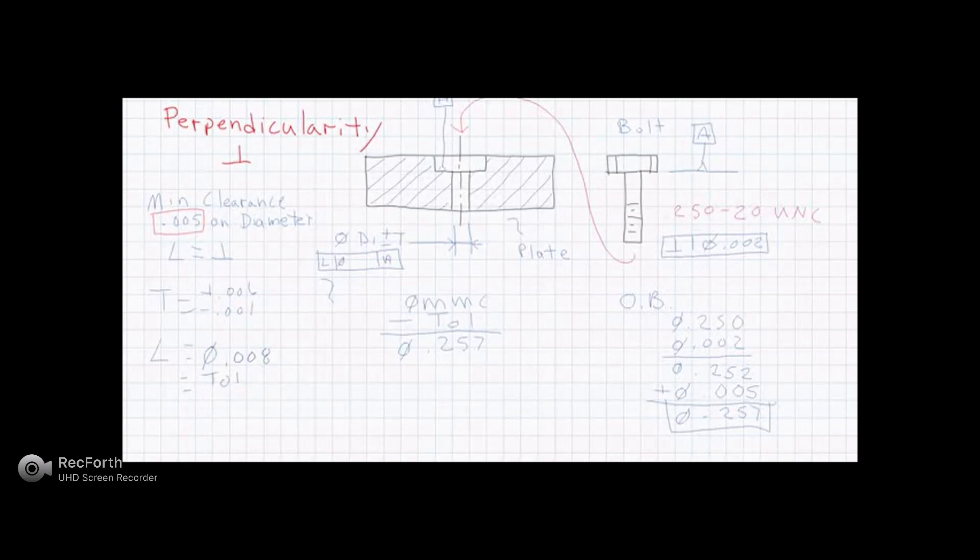This is equal to our tolerance. So I'm going to rewrite this equation. I'm going to say, using some algebra, a diameter of 0.257 plus our tolerance, which is a diameter of 8,000s, should equal to our maximum material condition size. So we know that we're larger. So in this particular case, maximum material condition size should equal to a diameter of 2,265,000s.